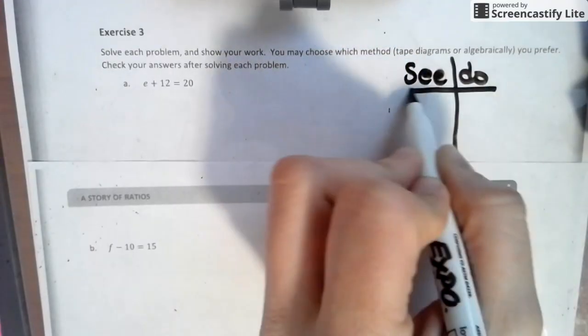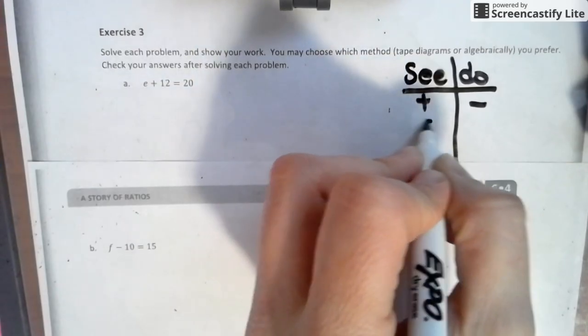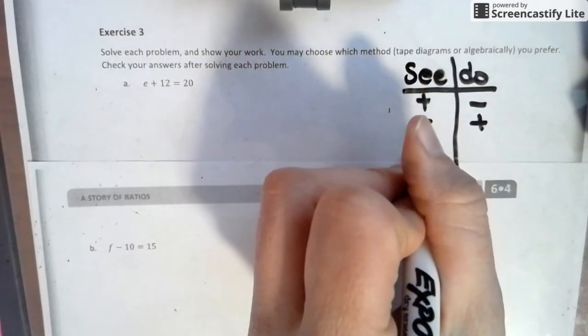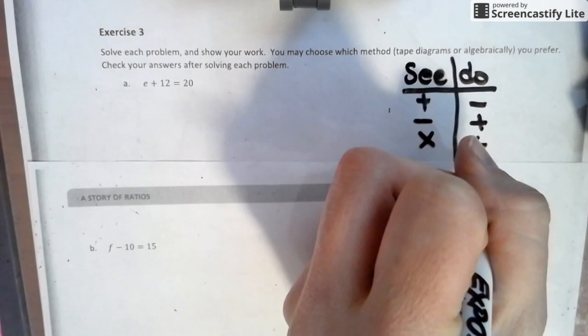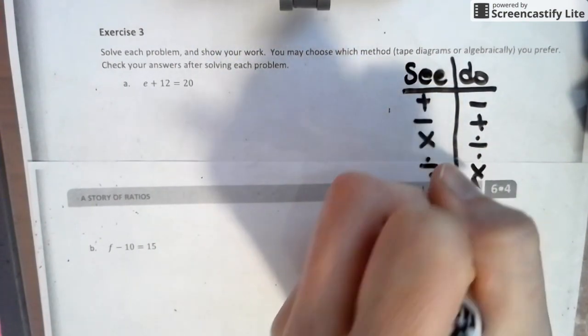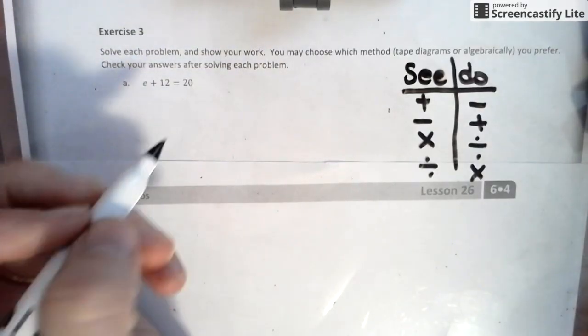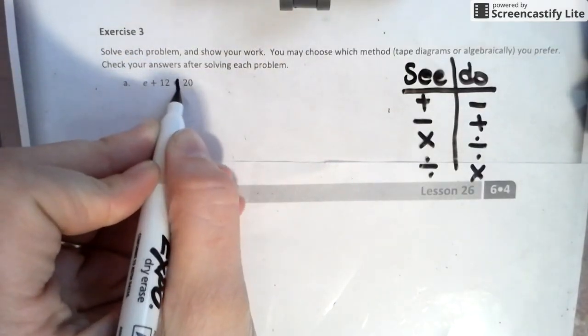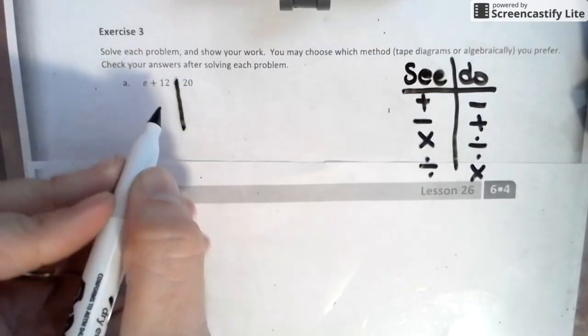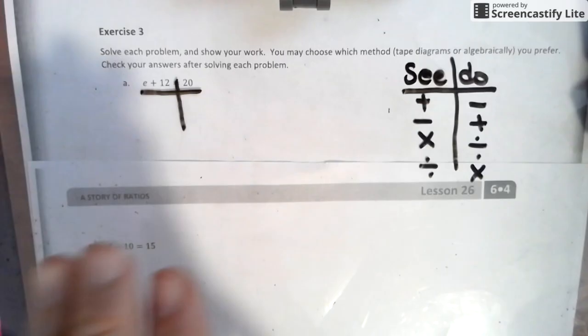You see something, we do the opposite. We see addition, we do subtraction to keep it balanced. See subtraction, we do addition to keep it balanced. We see multiplication, we do division. We see division, we do multiplication to keep it balanced. What I mean by keeping it balanced is like this: if we drew a line down the equal sign, it looks like those balances in science class where you put something on one side, you put it on the other side, and you keep it balanced.